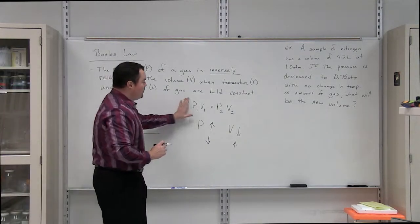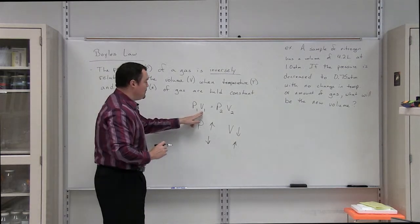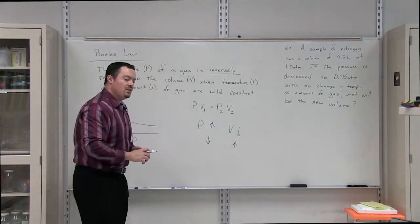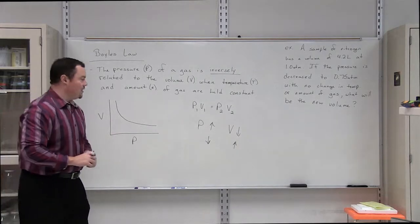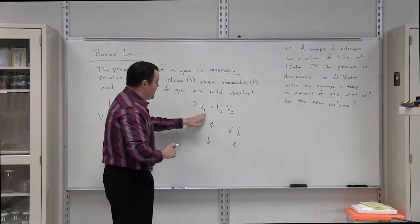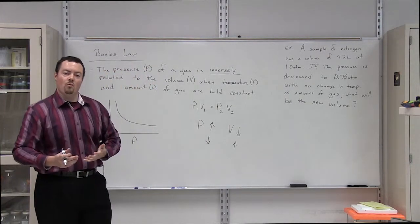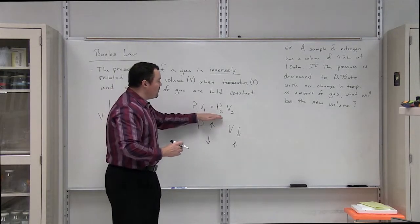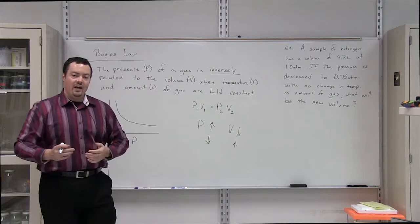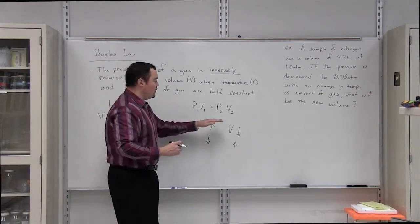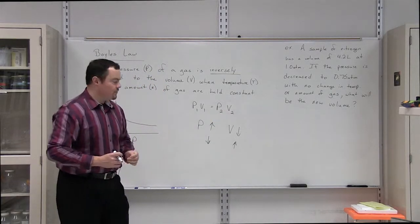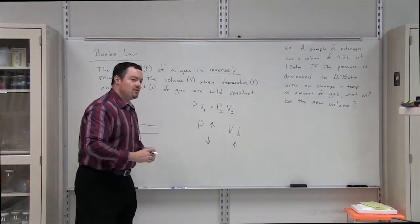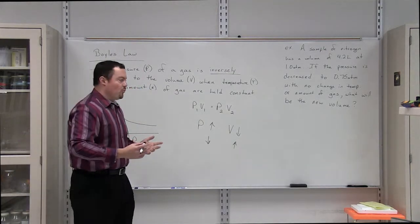The formula for Boyle's Law is P1 times V1 equals P2 times V2. This is pressure and volume at condition number one. When they are multiplied, they are equal to the pressure and volume of the gas under condition number two. So, how can we use this formula in a problem?